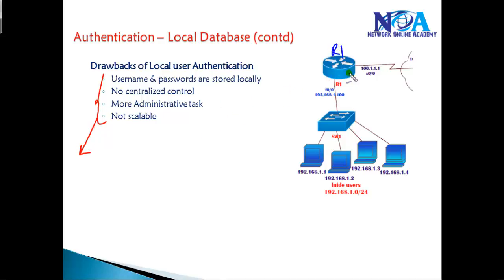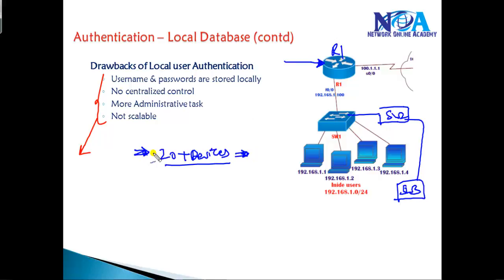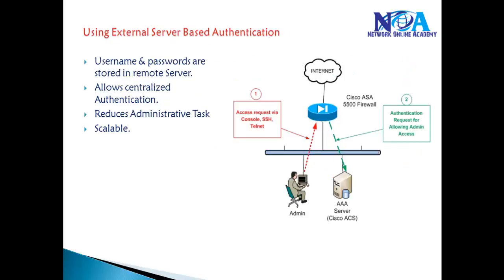In local based authentication, say we have Switch 1, Switch 2, and Switch 3. If you want any specific engineer to access any specific device, there must be a local username and password created on each and every device. But this is not possible in big size networks where you have 20-plus devices — going to each device and creating a username and password for each employee or engineer who will be accessing the devices remotely is not scalable. There is no centralized control and the administrative task is greatly increased.